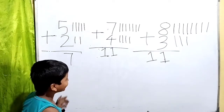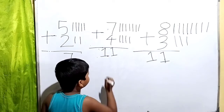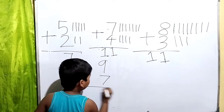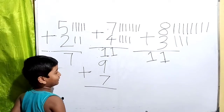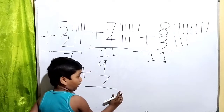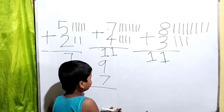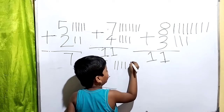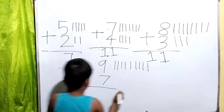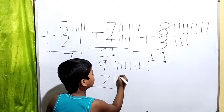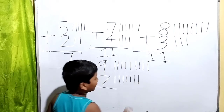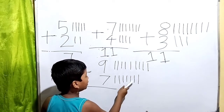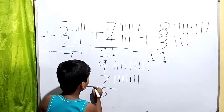The next problem is nine plus seven — it will have a very big answer! Let me draw nine lines: one, two, three, four, five, six, seven, eight, nine. Then we have to draw seven lines: one, two, three, four, five, six, seven. Let's count all of them — sixteen! Wow, it's very big — sixteen!